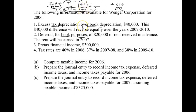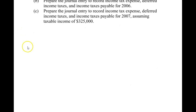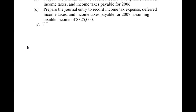Let's come down and do our reconciliation. Keep in mind: for the unearned rent we're going to add it, and for the depreciation we're going to subtract it, based on the shortcut. Financial income was given as 300,000. We have two differences: depreciation was 40,000 and unearned rent was 20,000.